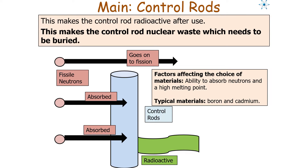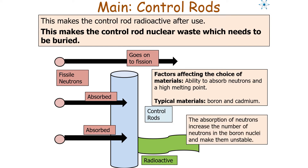The factors affecting the choice of material for a control rod are: the ability to absorb neutrons and having a high melting point, because it gets very hot in the reactor vessel. Typical materials used are either boron or cadmium. The absorption of neutrons increases the number of neutrons in the boron nuclei and makes them unstable, which is why they become nuclear waste.